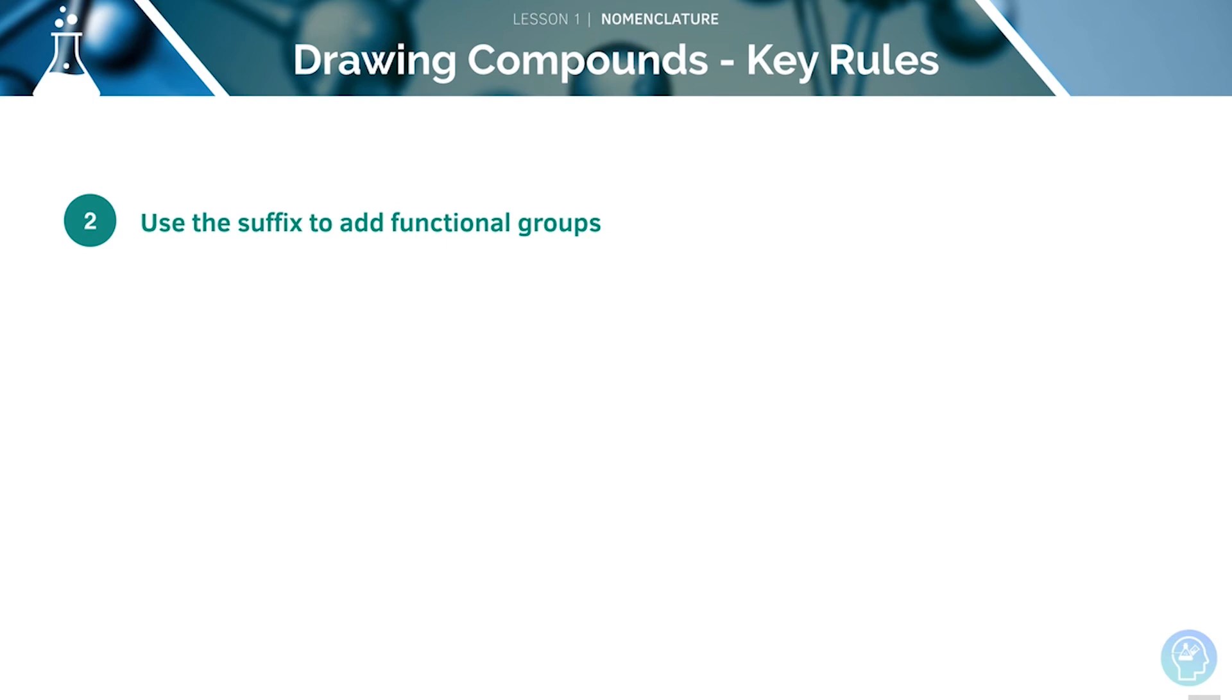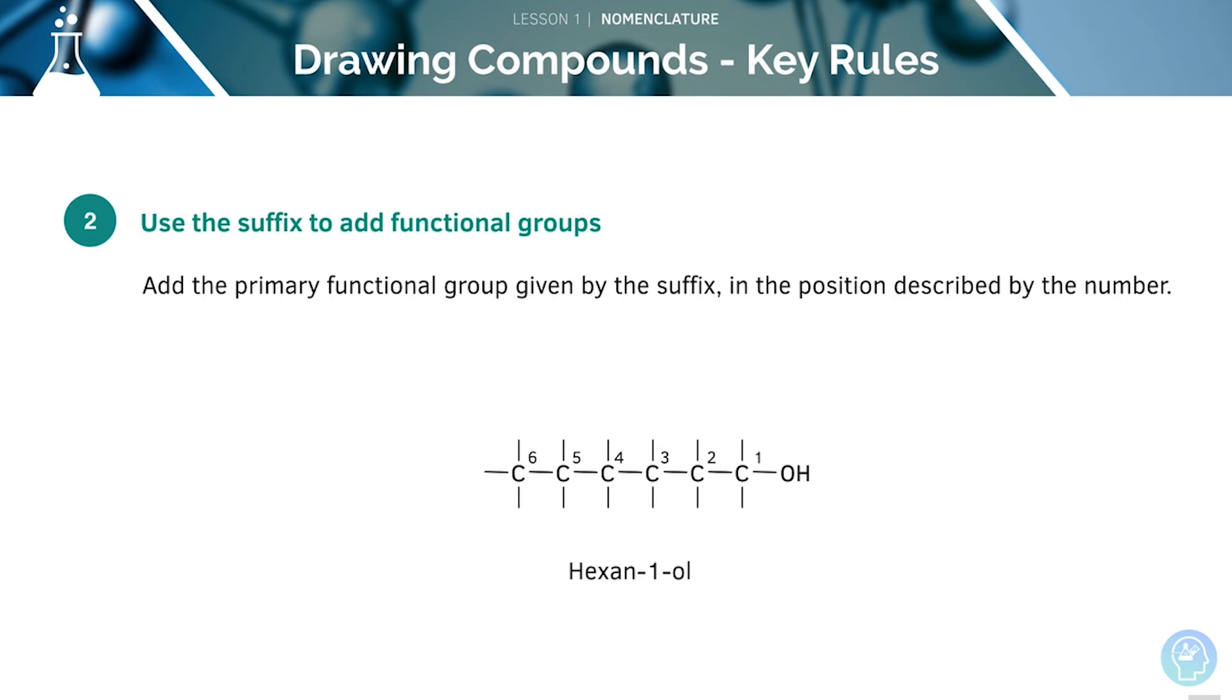Next, we use the suffix to add functional groups. We can add the primary functional group given by the suffix. We can use the number to help us identify exactly where to draw it. Here, we can see we have hexanol. This means we need to draw an OH off the first carbon.